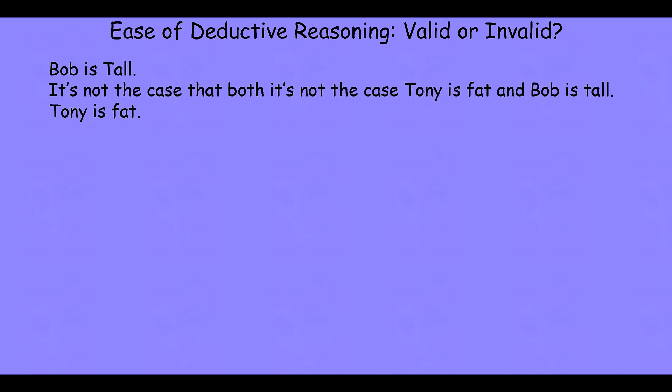Let's take a look at the first one. Premise: Bob is tall. Premise: It's not the case that both it's not the case that Tony is fat and Bob is tall. Conclusion: Tony is fat. You might want to pause the video and think about it. Try to decide — is this a valid or an invalid deductive inference? That is, if those first two sentences are true, does it guarantee the third sentence is also true?